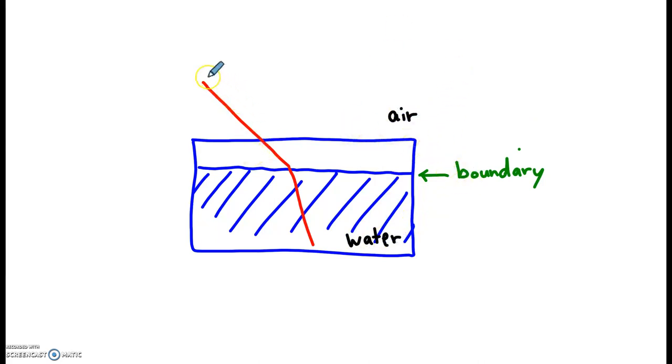The way we measure the angle of the light, we draw a normal line. Let's try that again. We draw a normal line. And why do we call it normal? Because normal force, normal line, the normal force is always perpendicular to the surface. This normal line is perpendicular to the boundary.